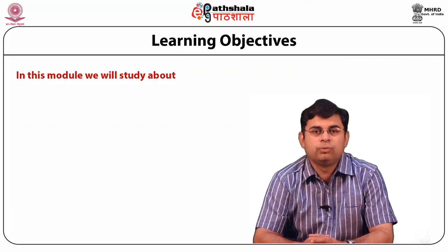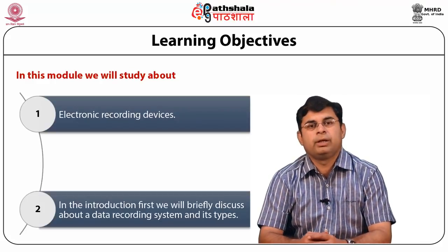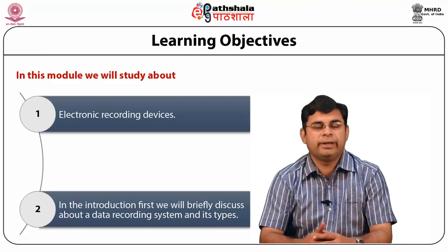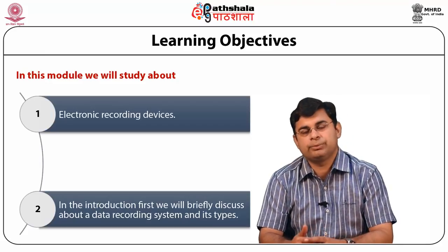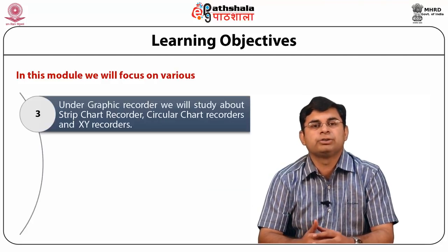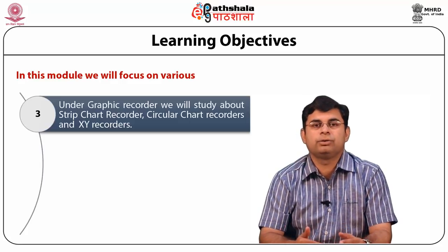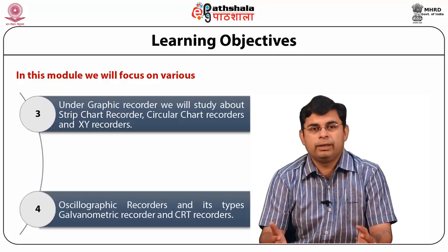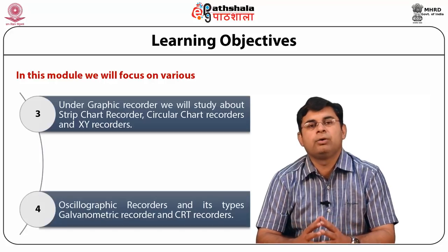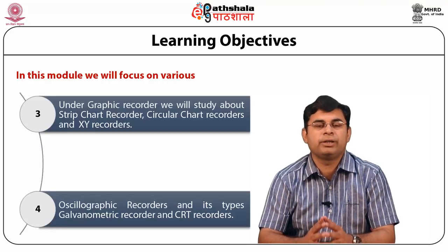In this module we study about electronic recording devices. In the introduction, we will briefly discuss data recording systems and their types. Under graphic recorders, we will study strip chart recorders, circular chart recorders, and XY recorders. Finally, we will study oscillographic recorders and its types: galvanometric recorders and CRT recorders.